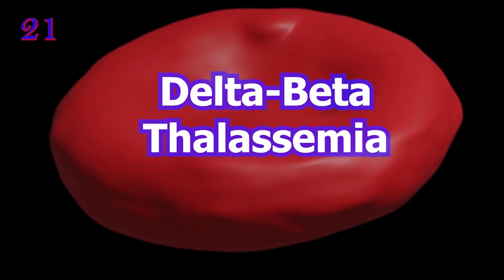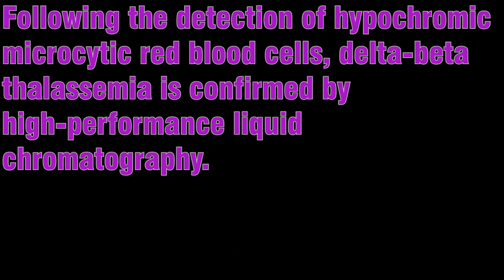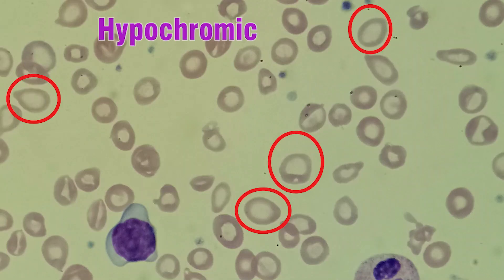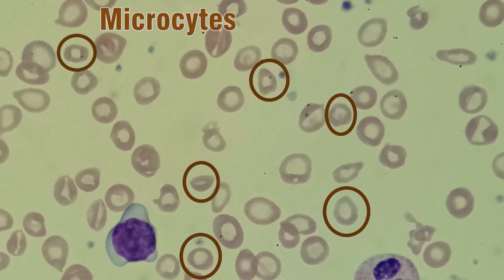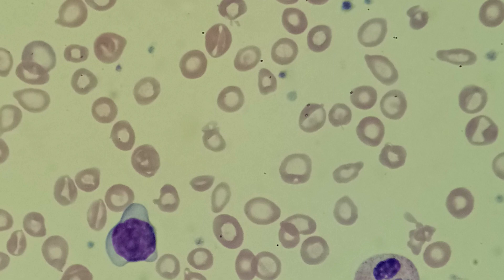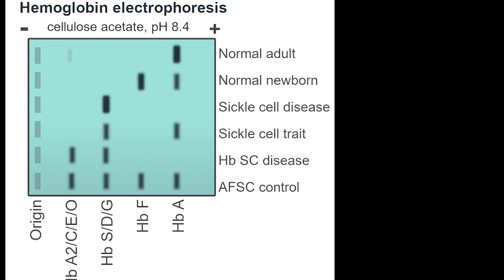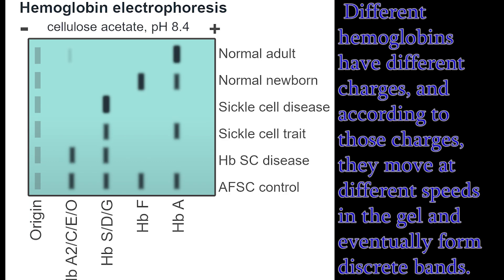Delta beta thalassemia is an autosomal recessive disorder caused by deletion of the entire delta and beta gene sequences, so that only gamma globulin or HbF is formed. Following detection of hypochromic microcytic RBCs, delta beta thalassemia is confirmed by high-performance liquid chromatography.